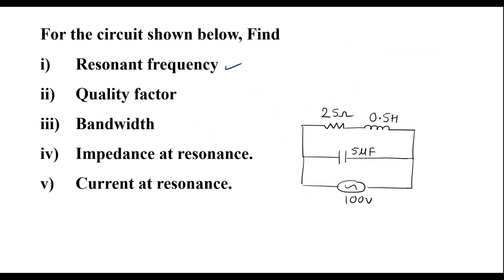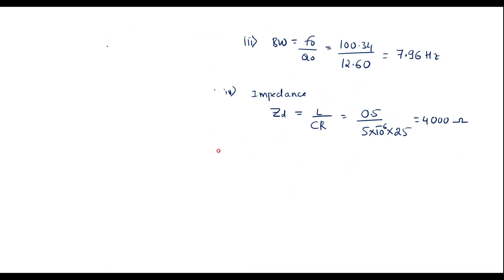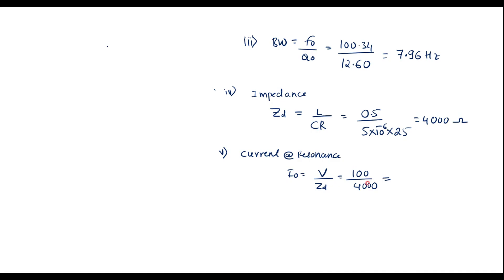Now let me calculate the last parameter: current at resonance. Current at resonance is given by voltage divided by dynamic impedance. That is 100 / 4000, which is 1/40, equal to 0.025 A. Thus we have calculated all parameters. Thank you for watching.